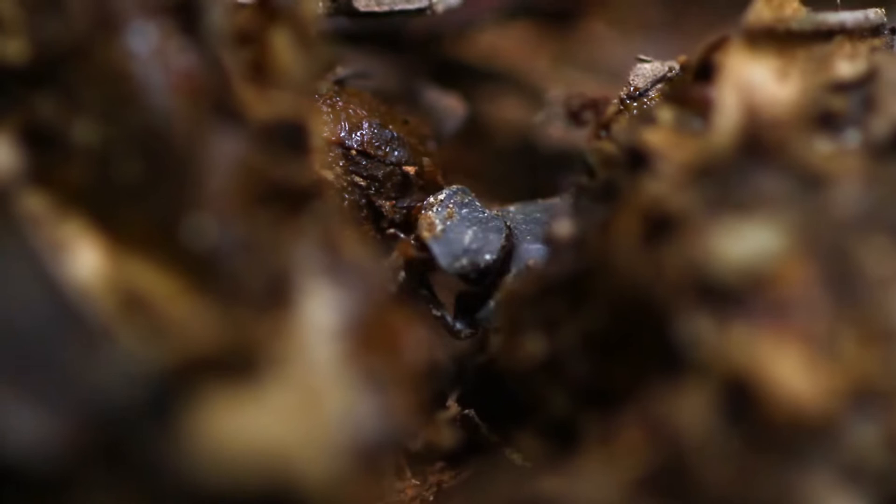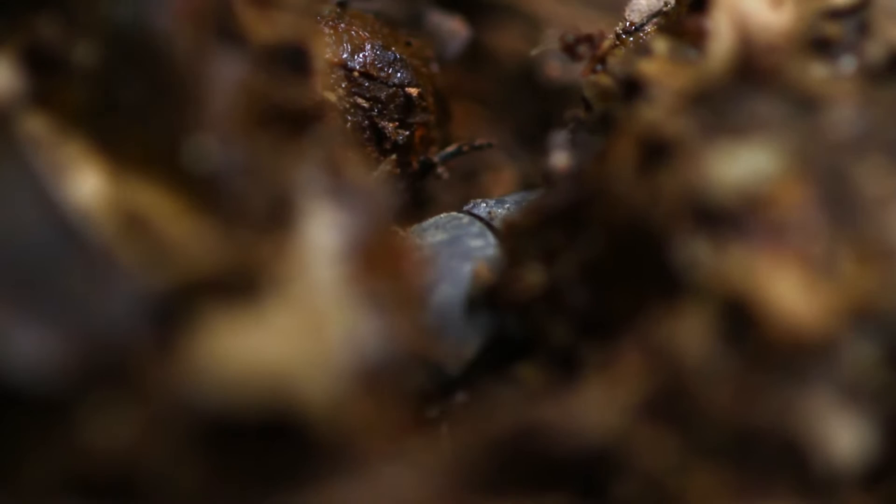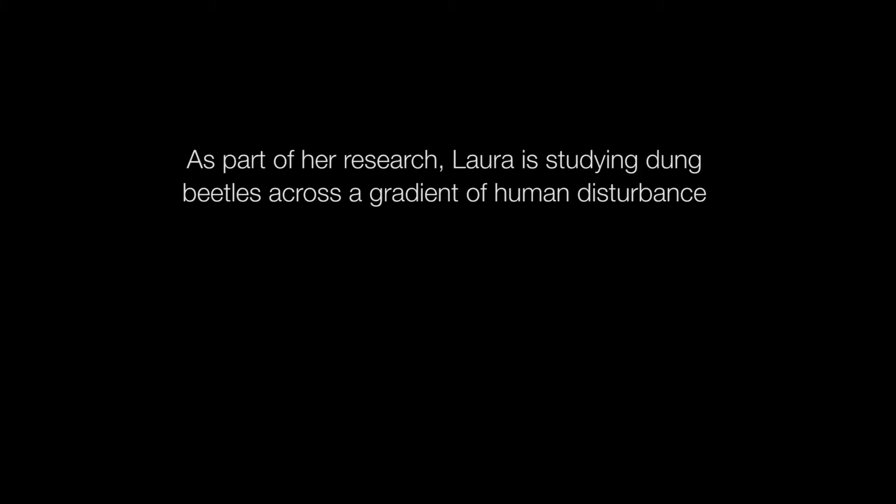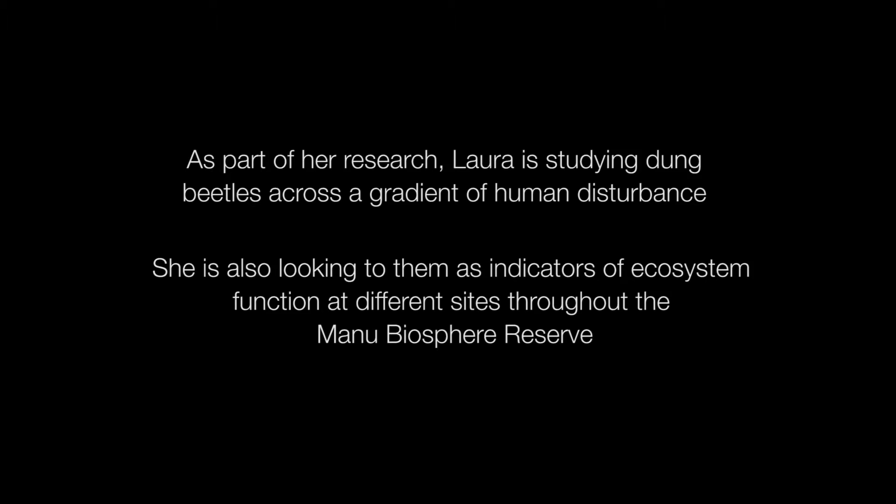They also act as secondary seed dispersers. When an animal does a poo and it has lots of seeds in it, all those seedlings will be competing with each other. What the dung beetles do is take these big piles and separate them out into other areas, giving those seedlings more of a chance to become established and grow, reducing competition within that deposit.